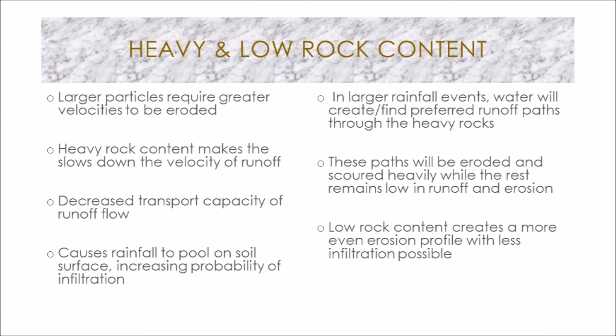Heavy rock content decreases the velocity of runoff over a hill slope, decreasing the erosion potential. In heavy rock soils, there are fewer fine particles to be displaced, and larger particles, which are more resistant to flow, require a higher energy content in the flow velocity to be moved. With a rougher surface, the transport capacity of the flow is decreased and pools are created in the rocky surface that increase infiltration, and therefore less is eroded away. In larger rainfall events, the rain will create preferred pathways for runoff through the heavy rocks, and this pathway will be heavily eroded and scoured while the rest remains low in runoff and erosion. Low rock content instead creates a more even erosion profile with less infiltration.